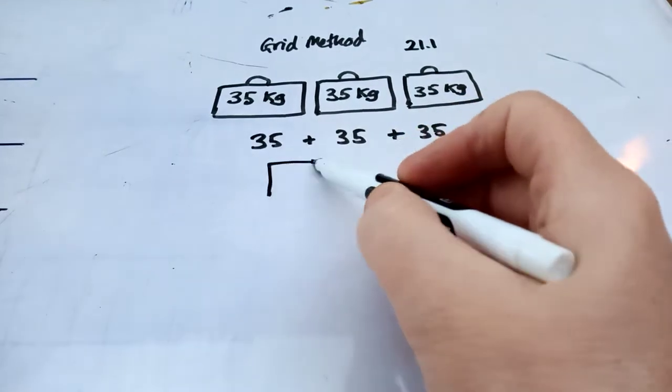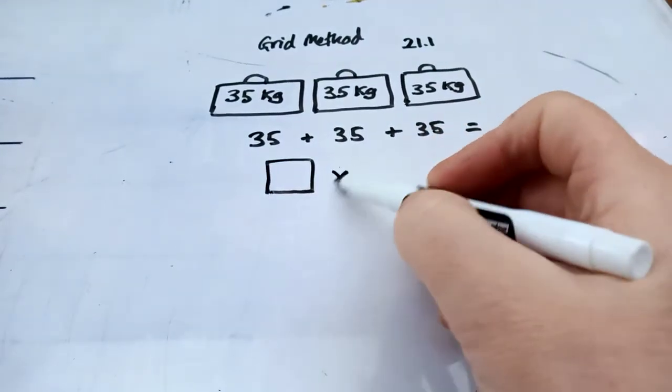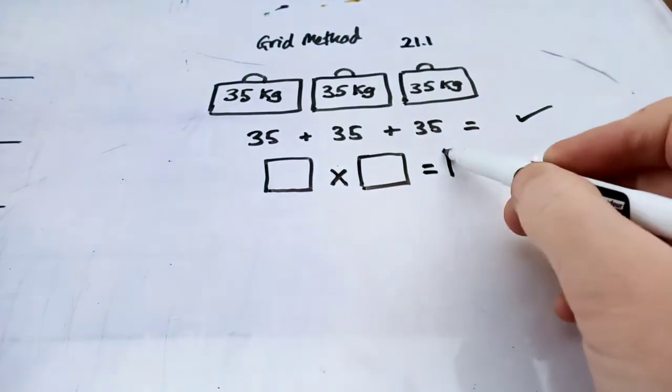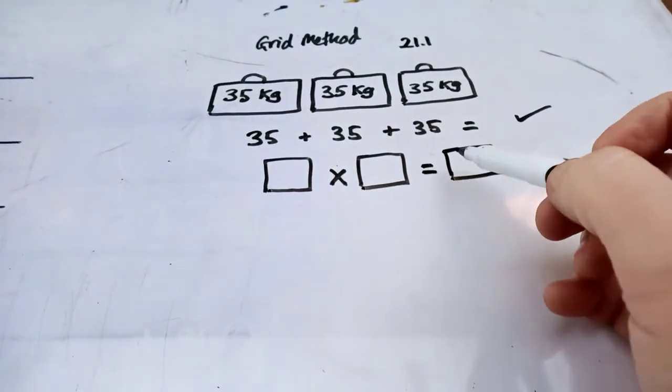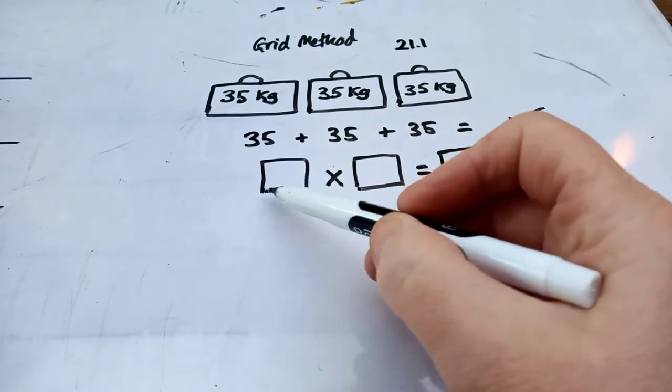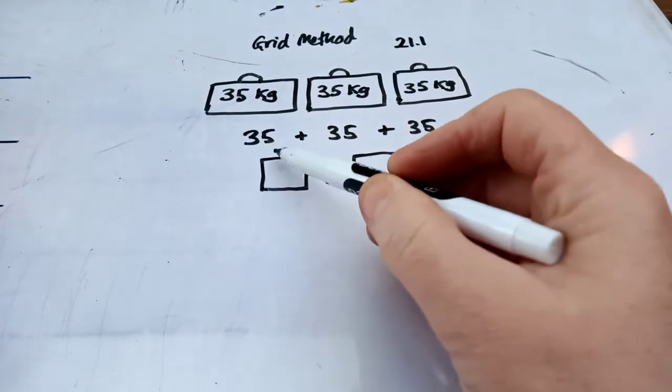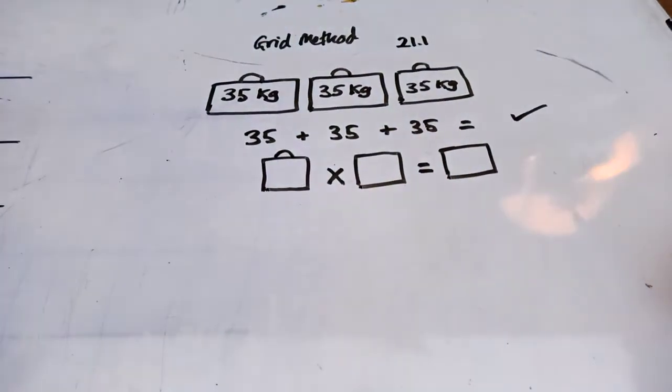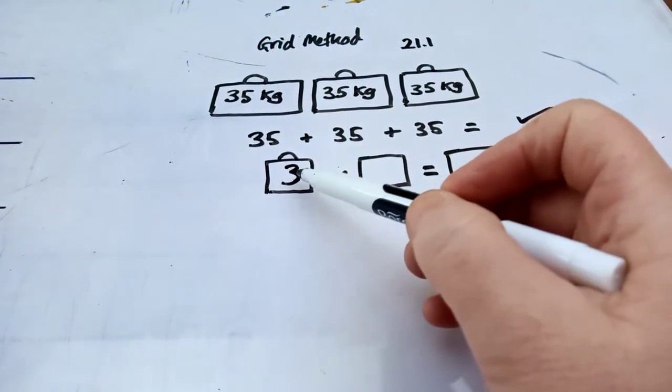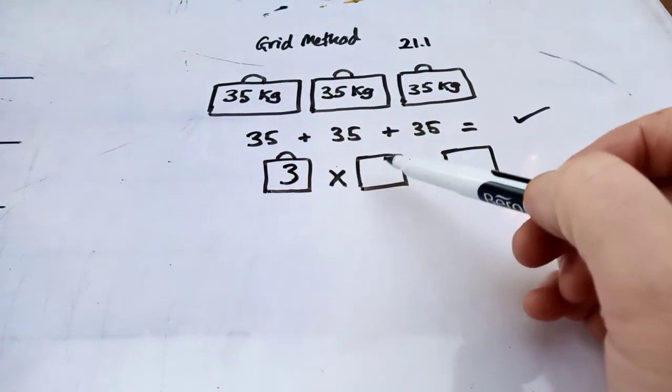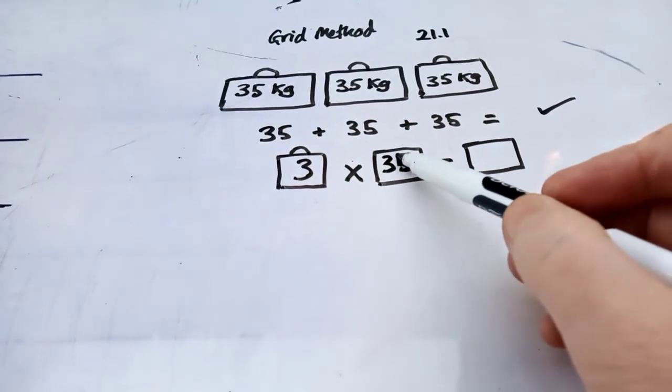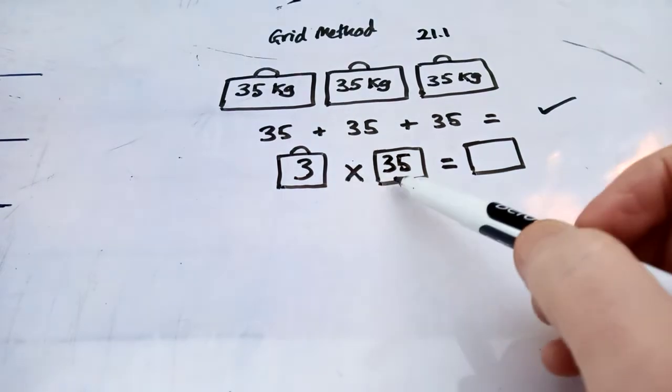Well, firstly, we know that with multiplication calculations we need a number at the beginning, a number there, and a number there. So, this box here says how many groups can you see? How many bags can you see? I can see three bags. And what's in each bag? 35. So, my calculation will be 3 times 35.